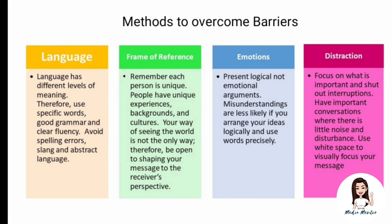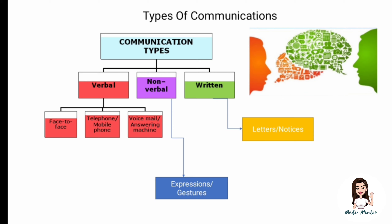Next are the methods to overcome barriers. These include knowing and understanding your target audience's language, their level of understanding, their backgrounds, and what misunderstandings are possible. Other methods include matching their timing, not using slang, avoiding spelling errors and abstract language, understanding the audience's culture and distractions, and always understanding the emotions behind what you are saying before conveying a message.